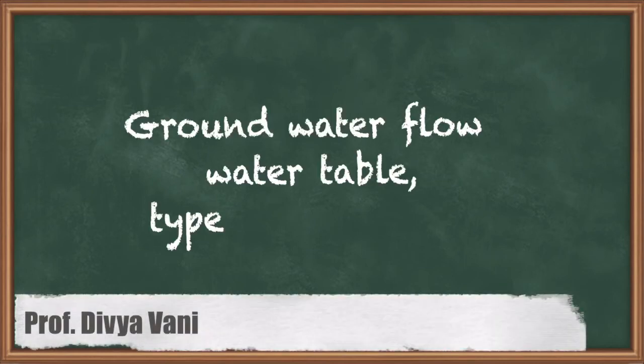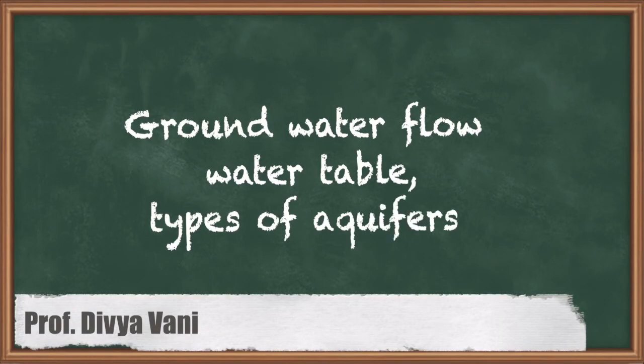Hello students, today we are going to learn about chapter 4, that is permeability of soils and seepage analysis. The first topic deals with groundwater flow, water table and types of aquifers.